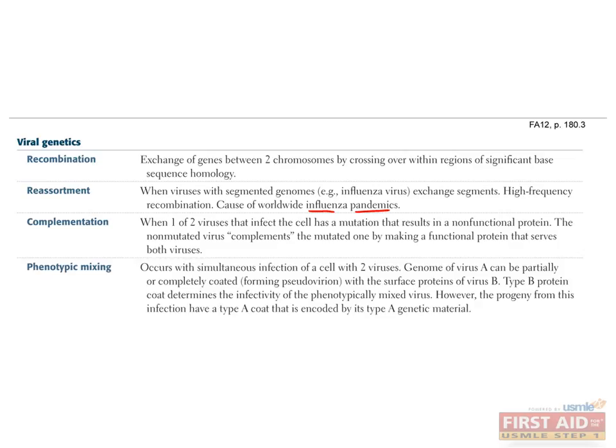In phenotypic mixing — or more precisely, what is known as phenotypic masking — a single host cell is infected with two related viral strains. The genome of one strain, virus A, is packaged within the capsid of another, virus B, so that the outside capsid is composed of proteins encoded completely by virus B, but the inside of the virus contains genetic material from virus A. Therefore, progeny of the pseudovirion will contain the same genetic material and capsid proteins as encoded by virus A, but the virus B capsid determines infectivity patterns of the pseudovirion.